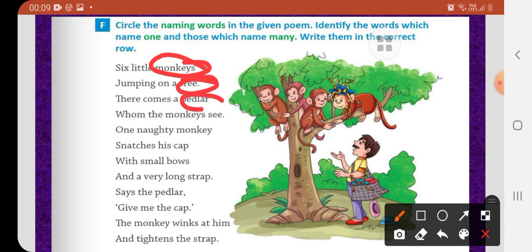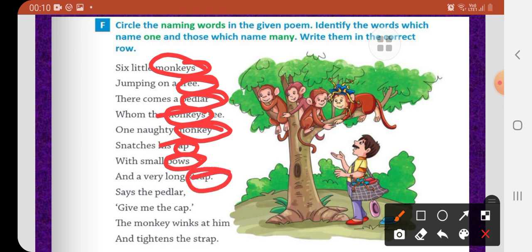Here monkeys is the naming word. You have to circle it. Jumping on a tree. Tree is the naming word. Circle it. There comes a peddler. Peddler is the naming word. Whom the monkeys see. Monkey is the naming word. One naughty monkey here. Snatches his cap here. Bows. And a very long strap here. Strap. Says the peddler. Give me the cap. The monkey winks at him. Monkey. And tightens the strap here.